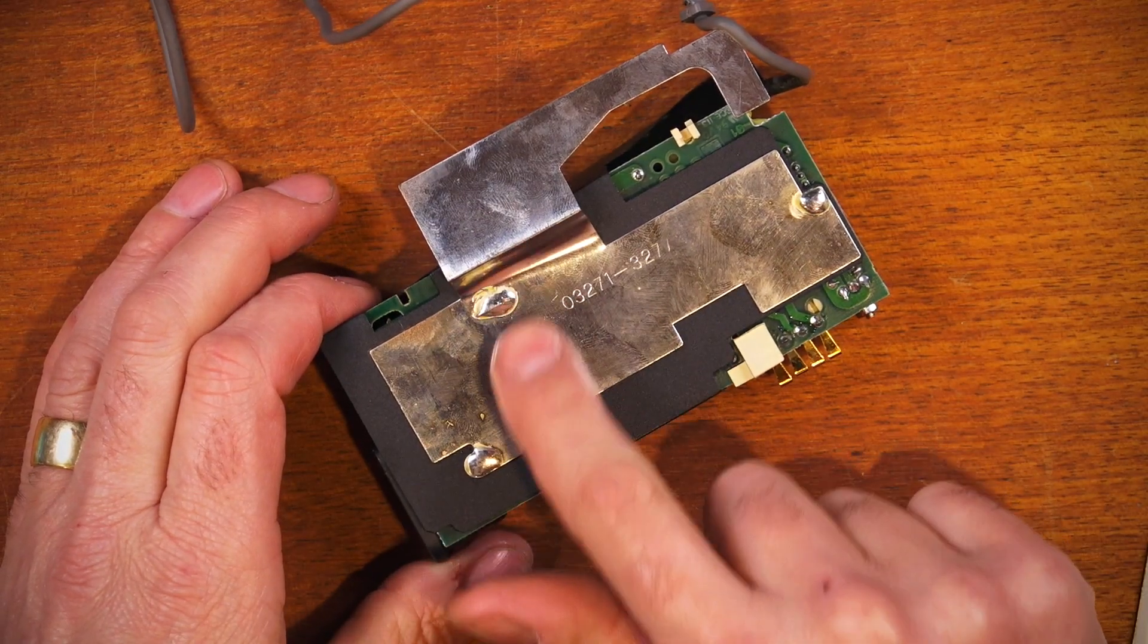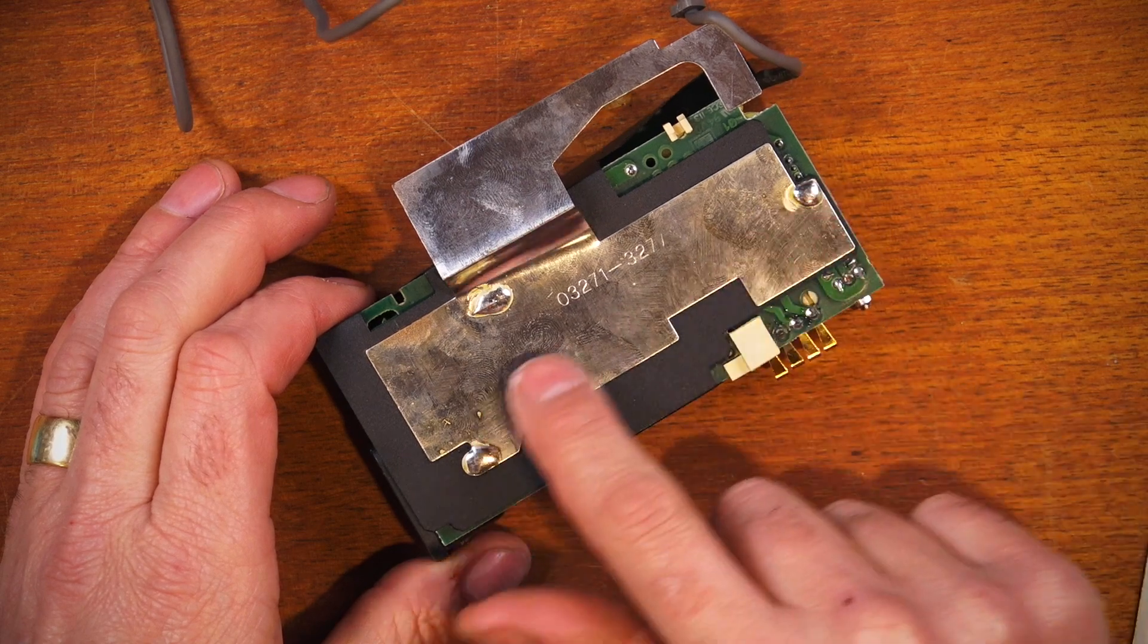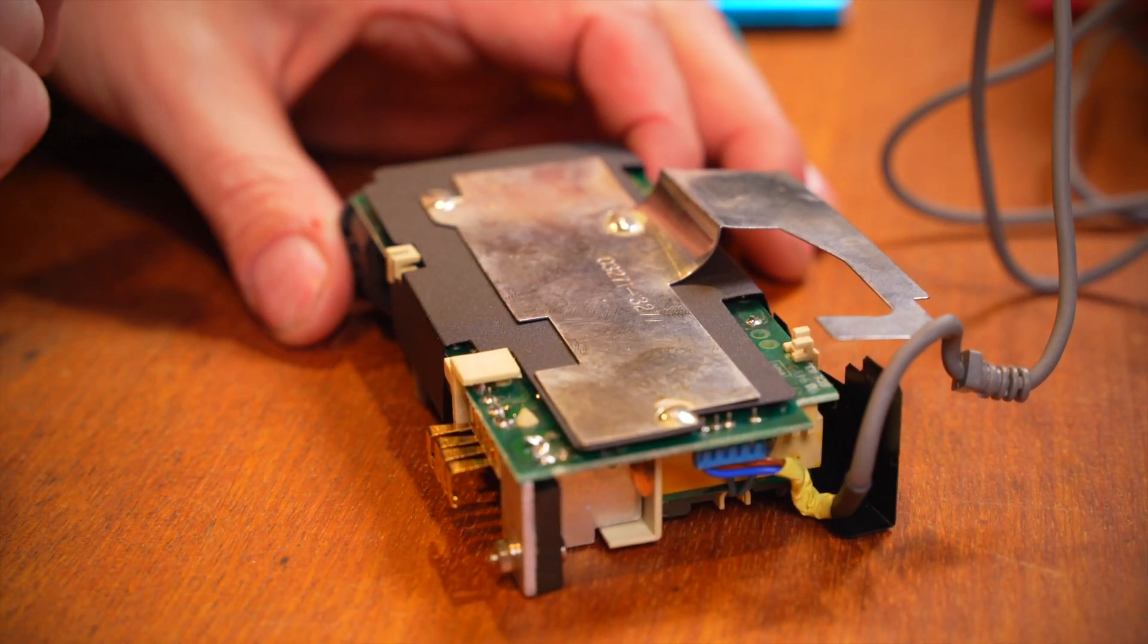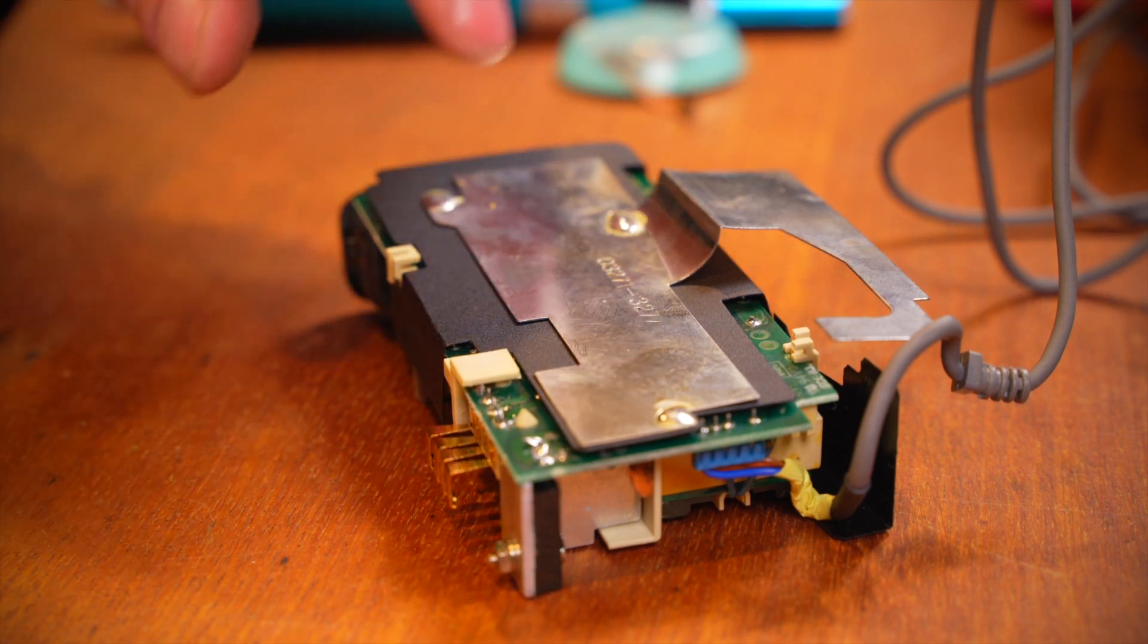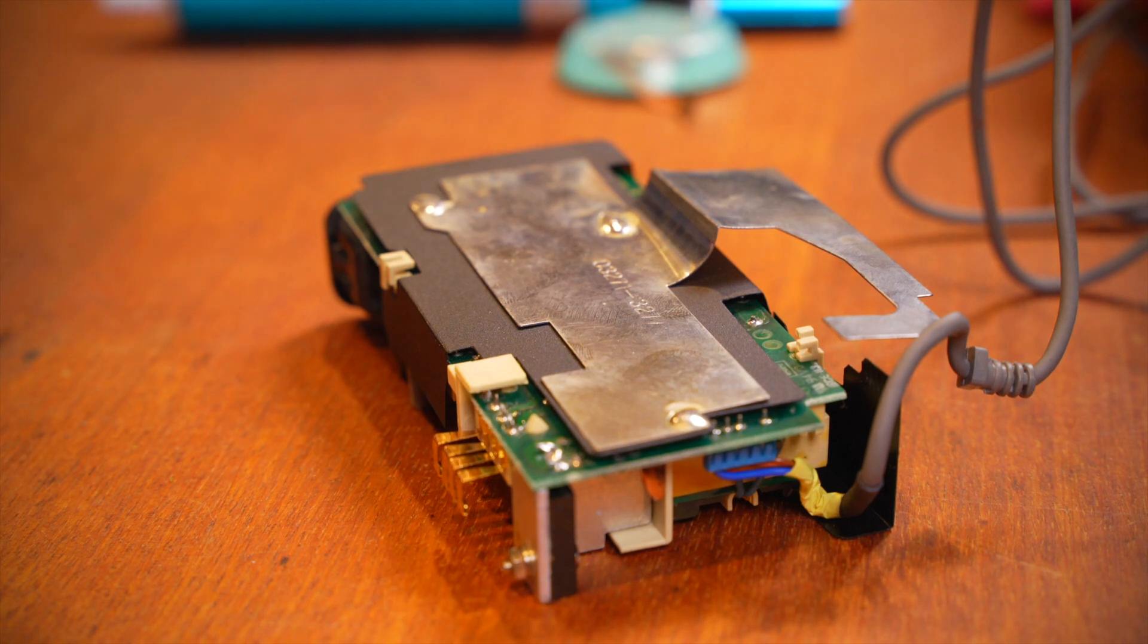Okay I'm gonna need to desolder these. I should have just done that to start with and then wouldn't have had to bend it because it's obviously in the way of that capacitor thing that we need to get. So let's desolder these three points, get the shielding off, get the plastic shielding off and start taking that capacitor out.